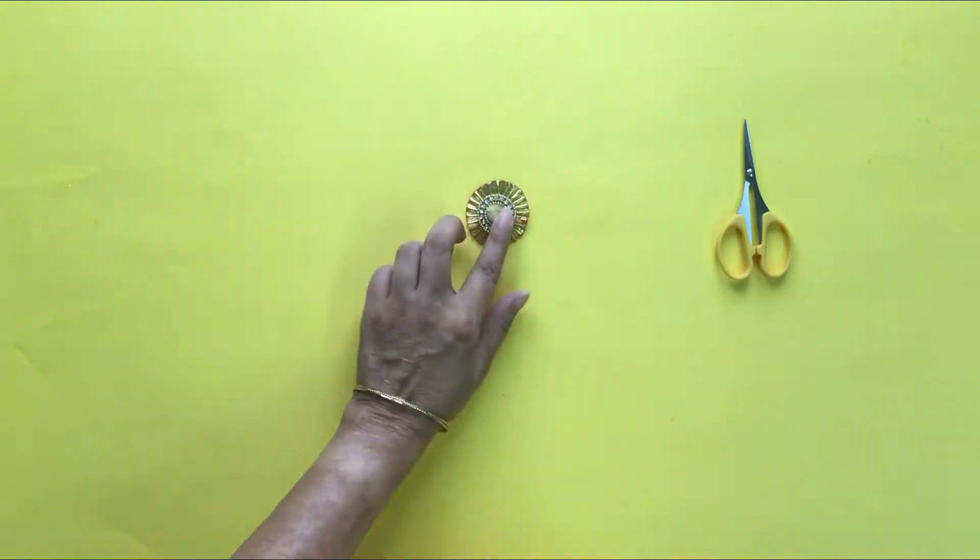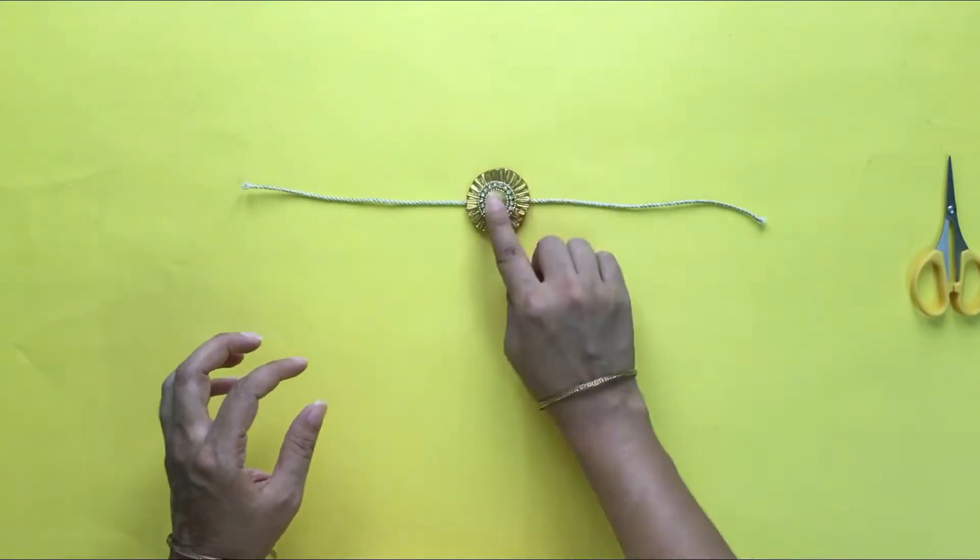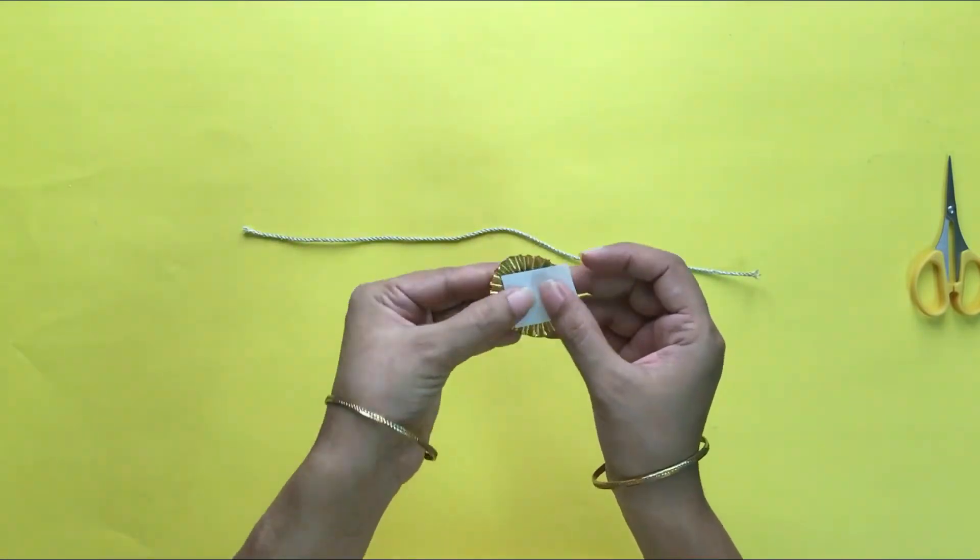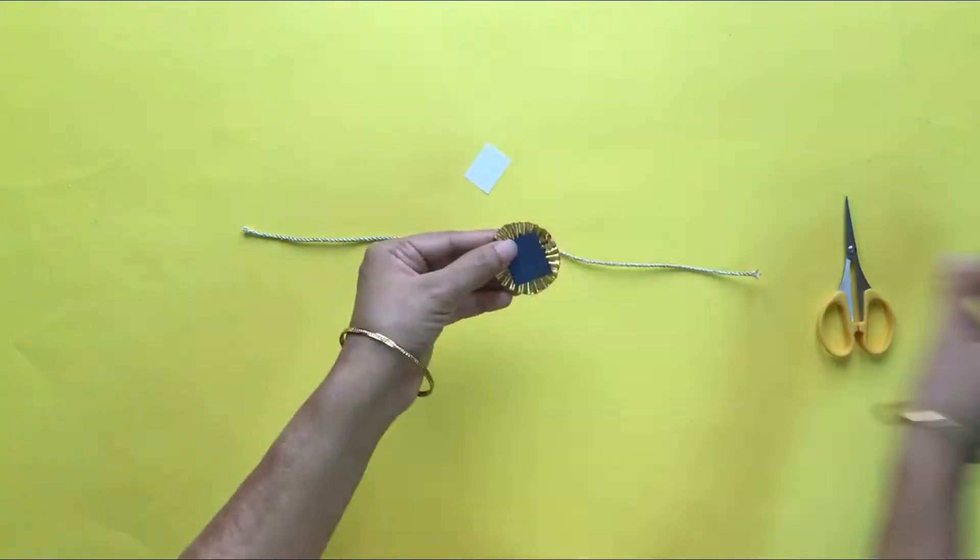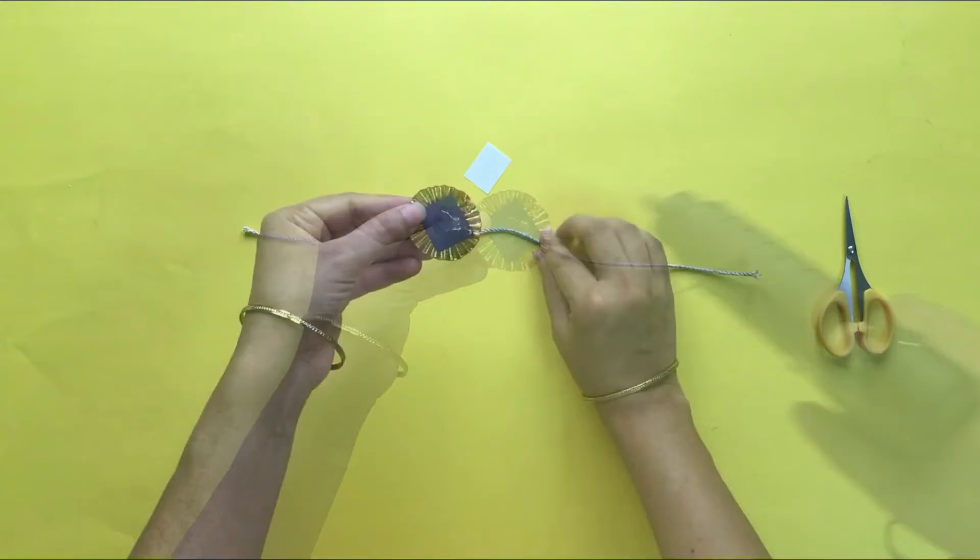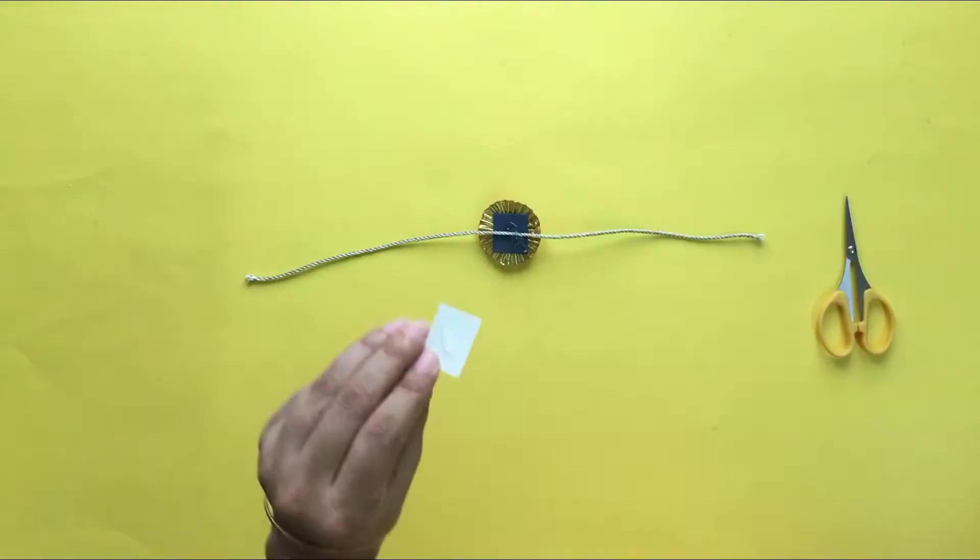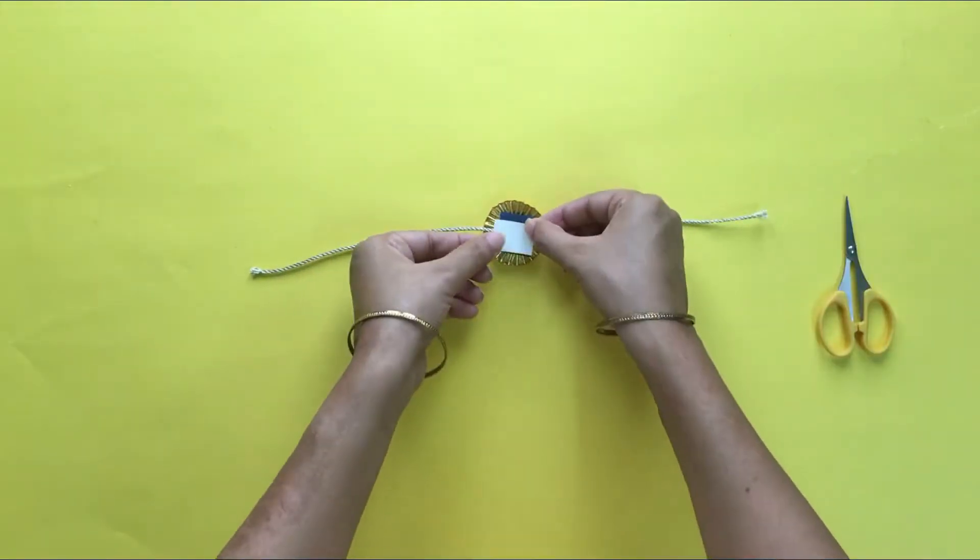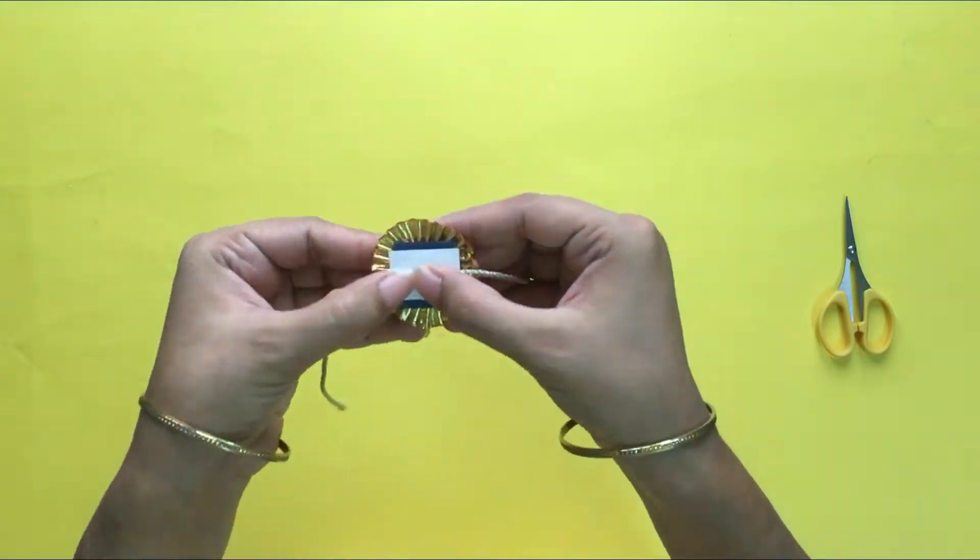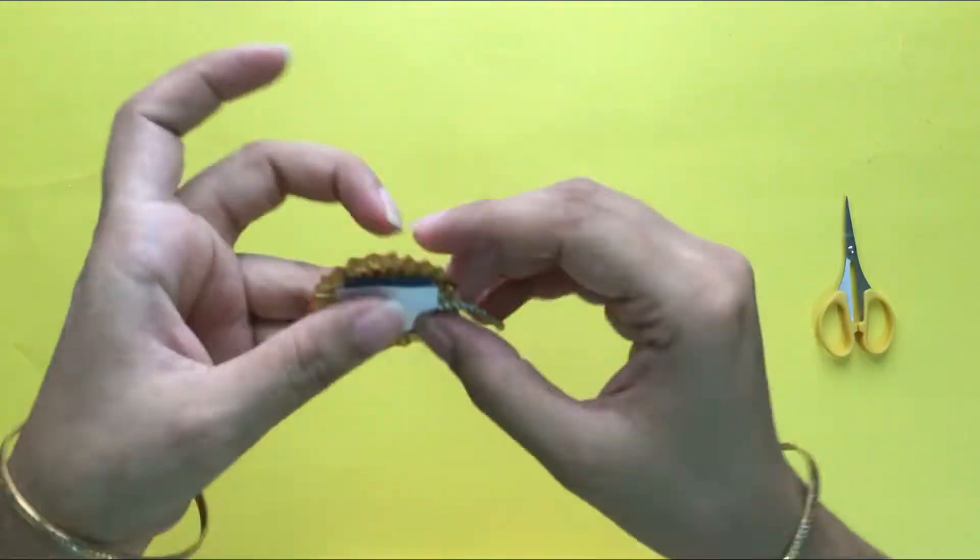Take a string cut in the length of about the wrist. Take a white thin paper of the same size of the cardstock. Fix the string on the back of the Rakhi using the hot glue and the thin paper. Press enough so that the string is fixed to the Rakhi.